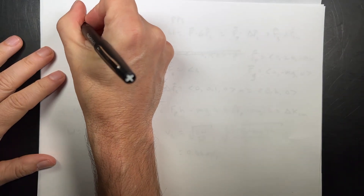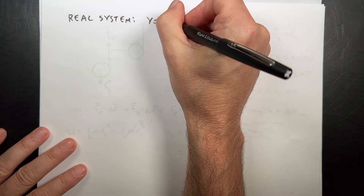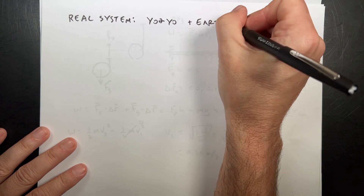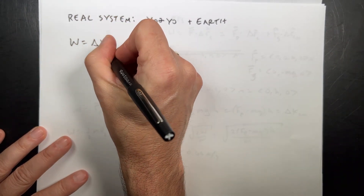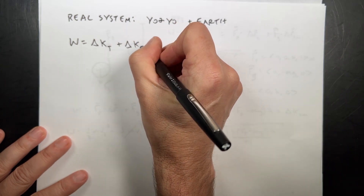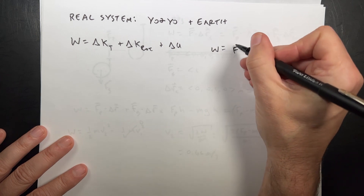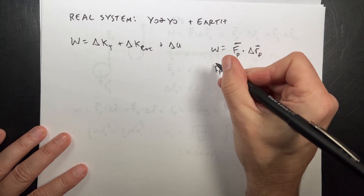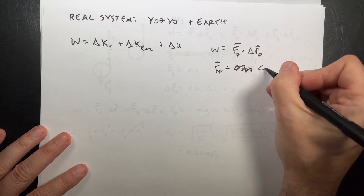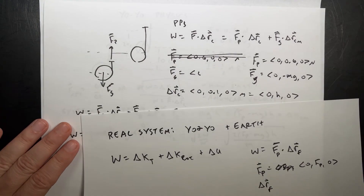Now for the angular velocity, I'll use the real system. I'll define the system as the yo-yo plus the Earth, so I can include gravitational potential energy. Then work done equals delta K_translational plus delta K_rotational plus delta U_gravitational. The work done is F_p dot delta r_f, where delta r_f is how far the string moves — 20 centimeters, which I'll call S = 0.2 meters. So the work is F_p times S.